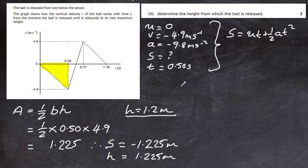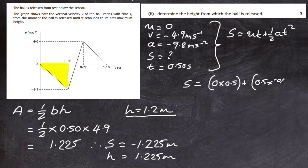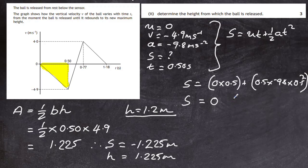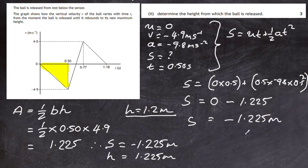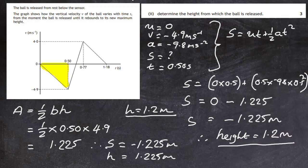Plugging in: S = (0)(0.5) + 0.5 × (−9.8) × (0.5)². The first term becomes 0, and working out the second term gives S = minus 1.225 metres — the same answer as the graphical method. Therefore, the height H (dropping the minus sign) is 1.2 metres to two significant figures. Both the kinematic method and the area-under-graph method give the same result, but you must be clear which area of the graph you are working with.